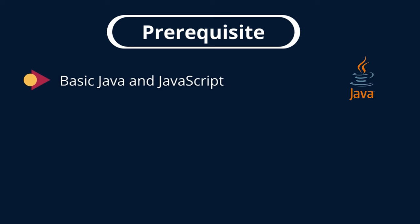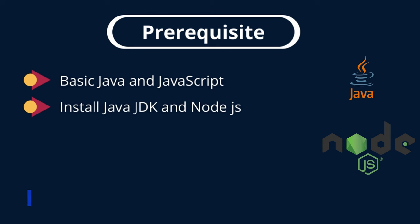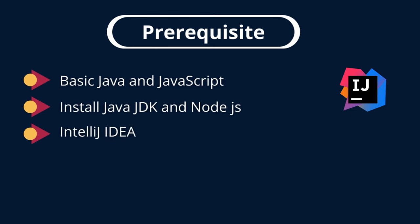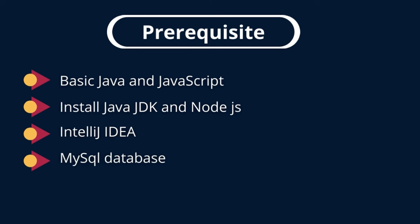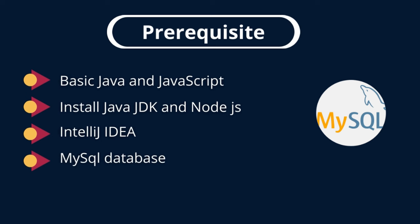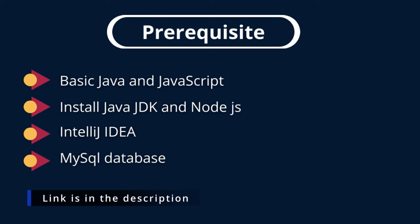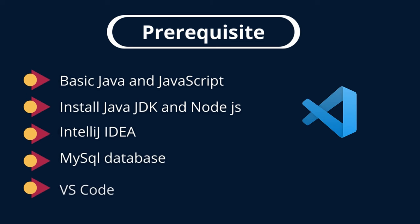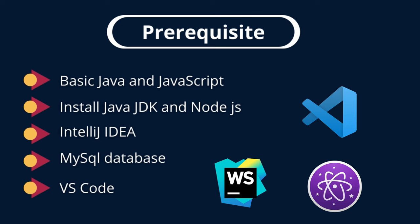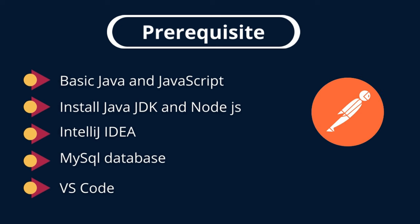Let's talk about the prerequisites to follow this course. You need to have basic knowledge of Java and JavaScript. You need to have Java JDK and Node.js installed on your system — I have videos for both in the description. We will be using IntelliJ for Spring Boot, though Eclipse or Spring Tool Suite work too. We'll use MySQL database, so make sure to install MySQL Server. For React we'll use VS Code, though other editors like Atom or WebStorm are fine. For testing the API we will be using Postman.